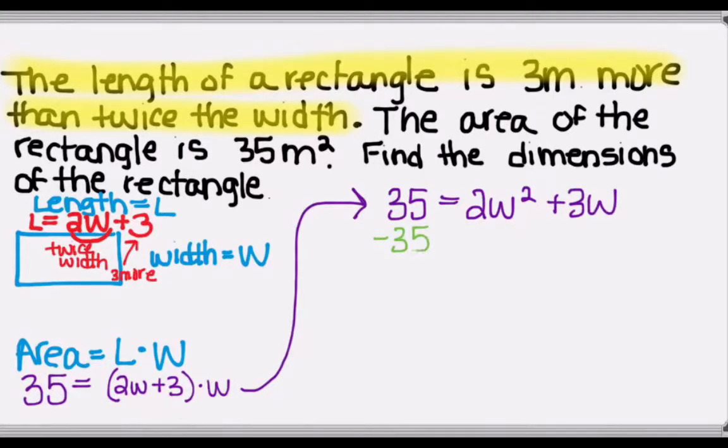Since this is a quadratic equation, we'll actually get 0 on one side. So if we subtract 35 from both sides, we get 0 is equal to 2W squared plus 3W minus 35.